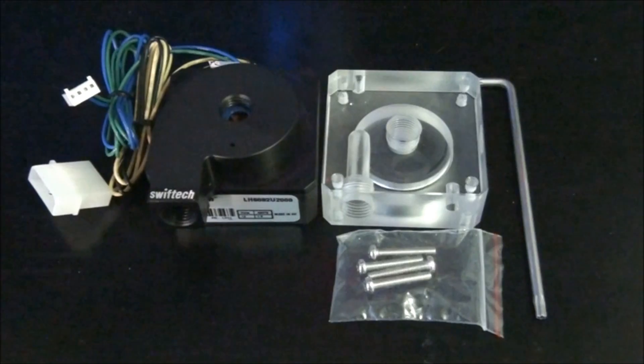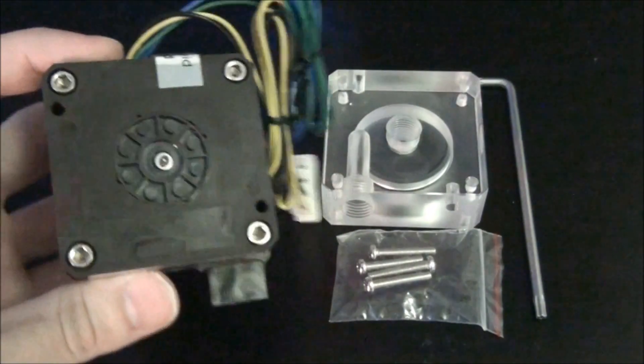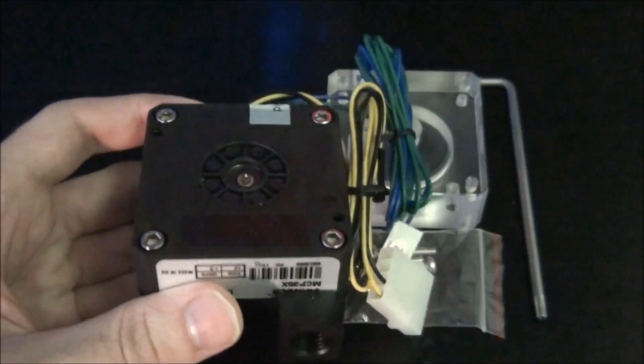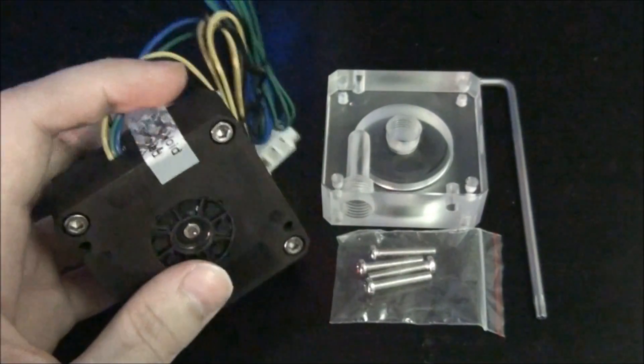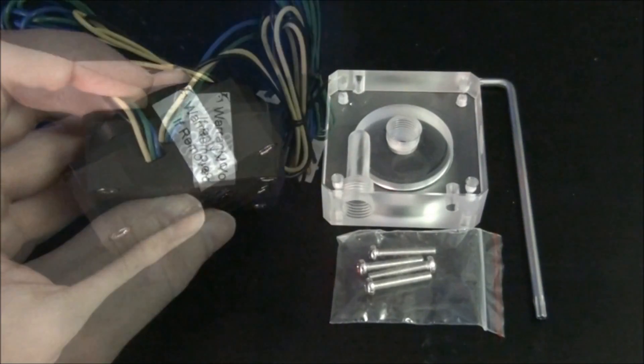The first step to installing a new custom pump top onto your pump is obviously removing the old one. If I turn this over you can see there are 4 allen key bolts which need to be removed. And there is one little problem - there's a warranty void if removed sticker.